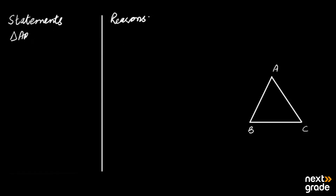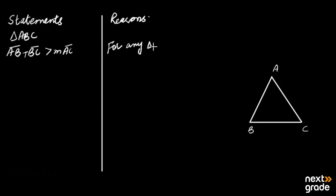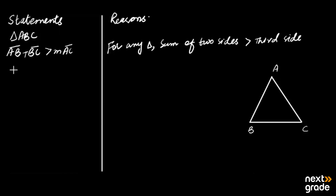We must assume the two sides of the triangle, and we have to confirm the two sides. Then we choose the reason: for any triangle, the sum of two sides is greater than the third side. We have to use this theorem. If we have the result of this, then basically we can see we have two sides — AB or BC.